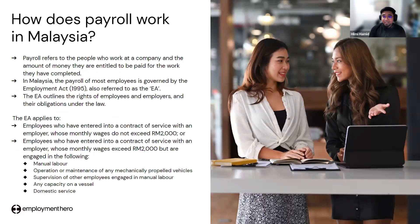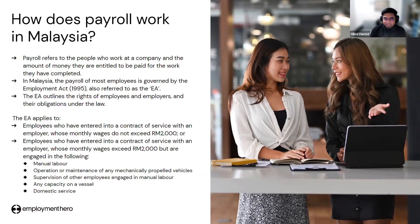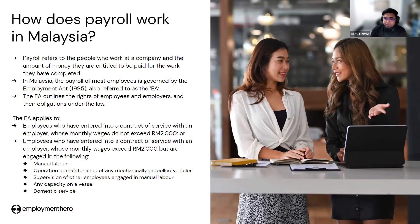Employees in Malaysia are governed by the Employment Act, or what we normally refer to as the EA. Under the current EA, there are two sides of employees governed: employees with a monthly salary below RM2,000, and those who exceed RM2,000. The EA primarily governs employees whose salary does not exceed RM2,000 ringgit — so we have EA employees and non-EA employees.